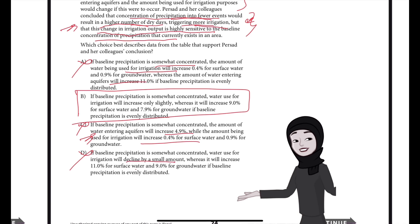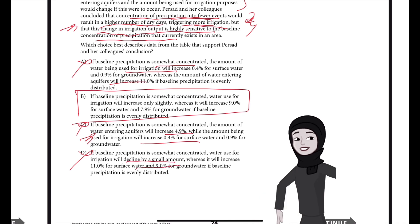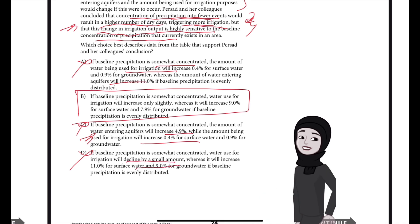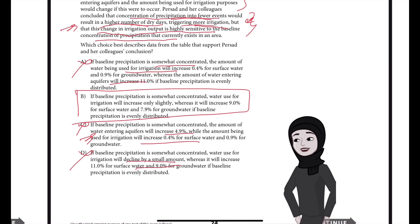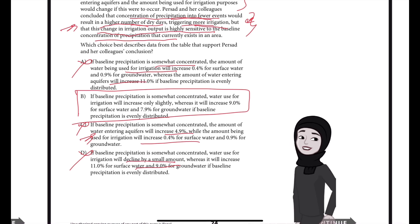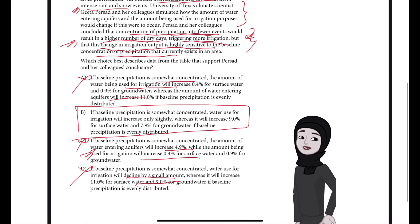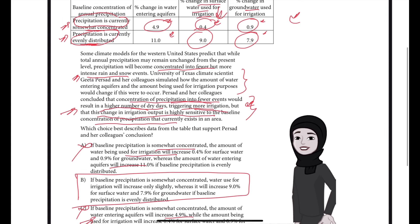There is no decline in water use for irrigation indicated in the table — only increases with positive values — so choice D is incorrect.